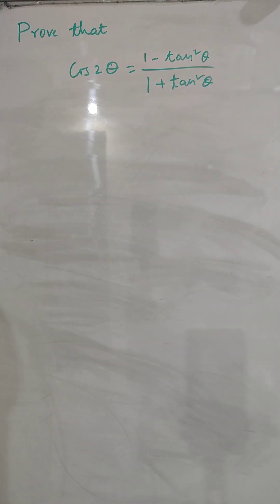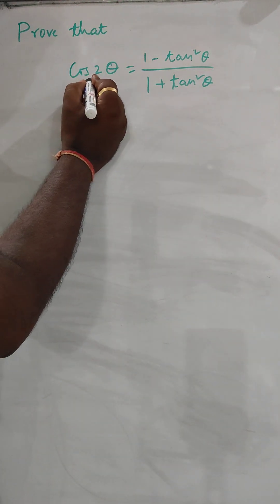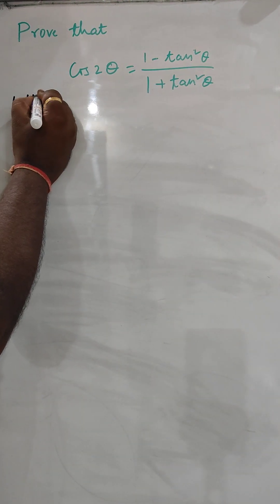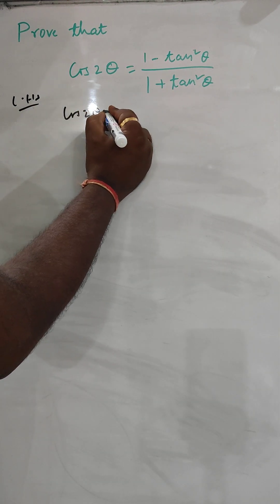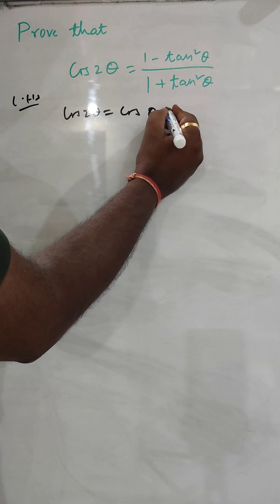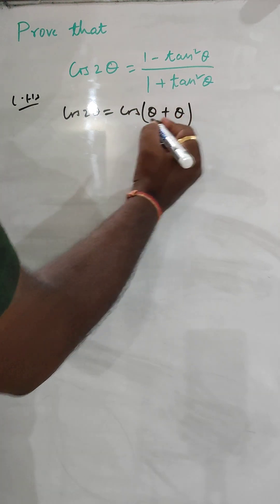Hello everyone. Today we are going to prove that cos 2θ is equal to 1 minus tan²θ divided by 1 plus tan²θ. We take this as LHS. We can take cos 2θ and write it as cos(θ + θ), meaning we can use the cos(A + B) formula.